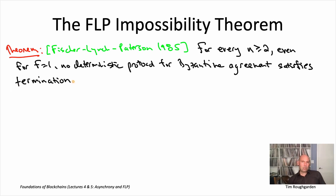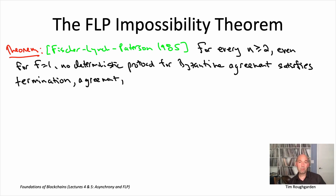The first property is termination: if you're an honest node and you follow the protocol, eventually you should halt, and when you halt you have to halt with an output. The second property is agreement — our safety property. No matter who is Byzantine, no matter what people's private inputs are, it should never be the case that two honest nodes disagree. At termination, all honest nodes should halt with exactly the same output.